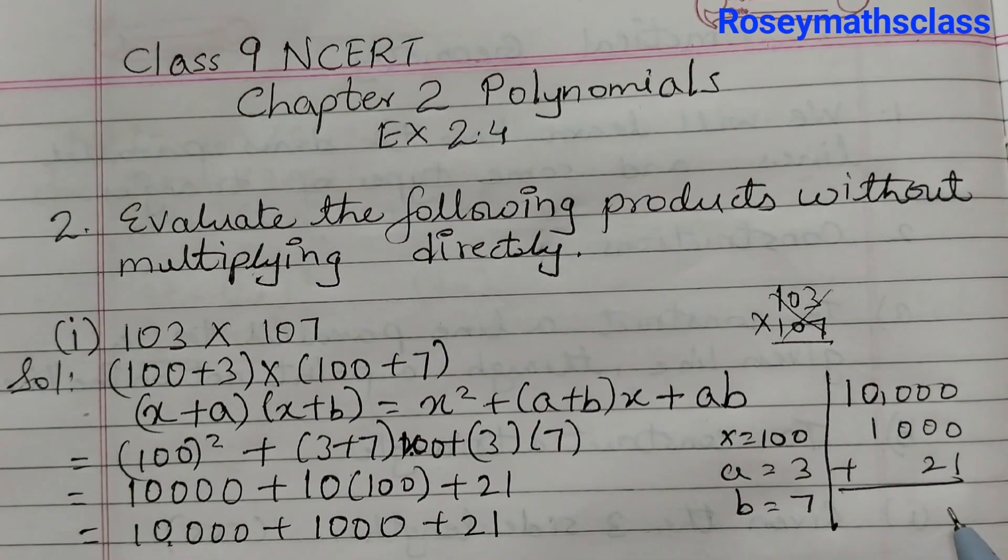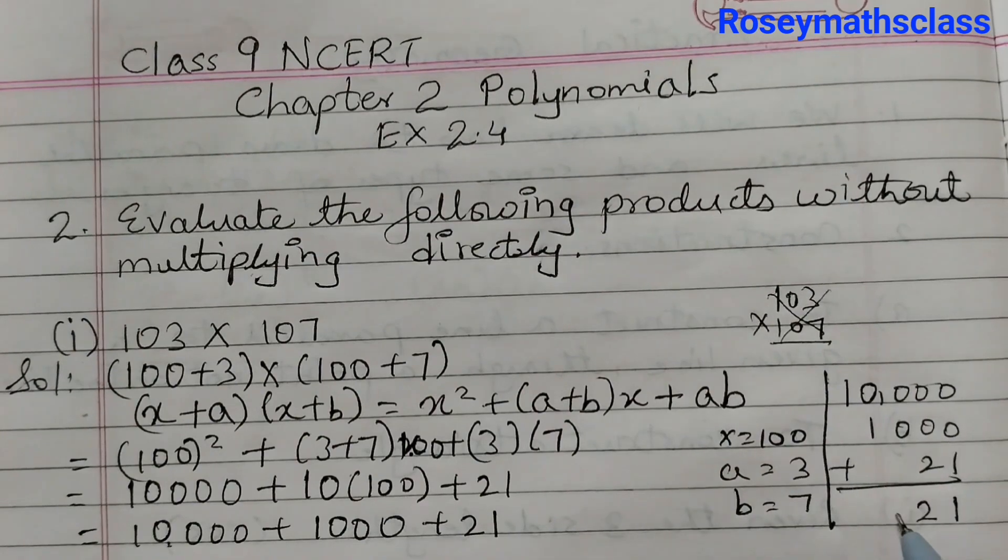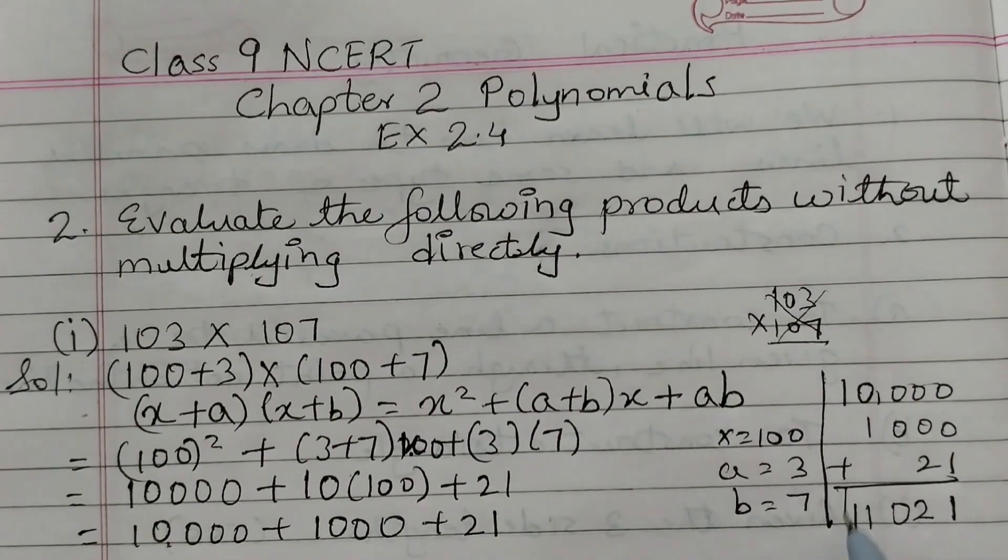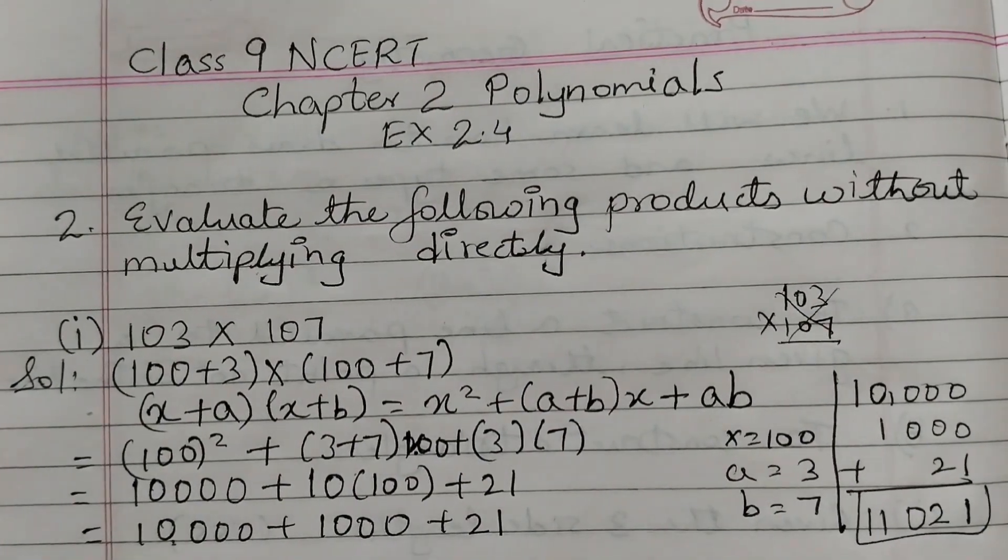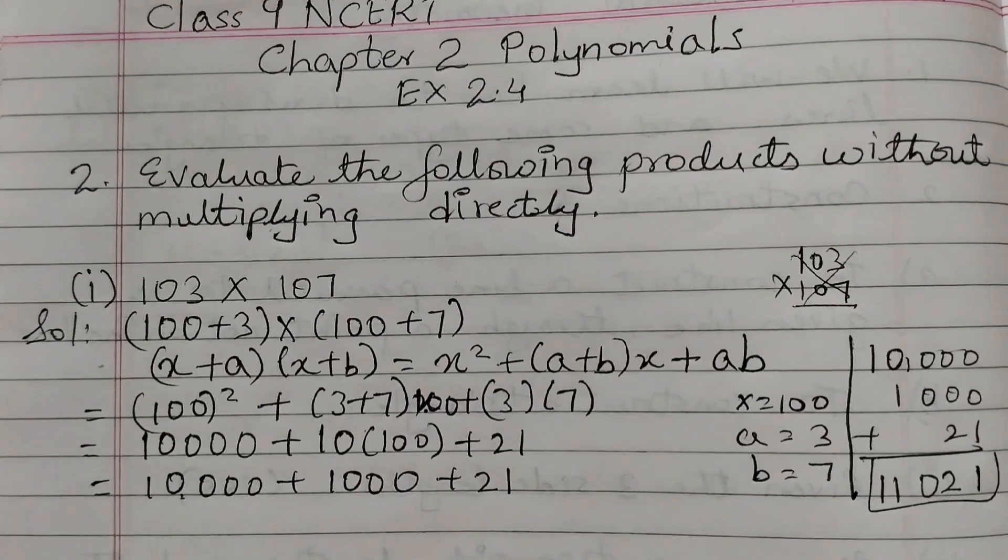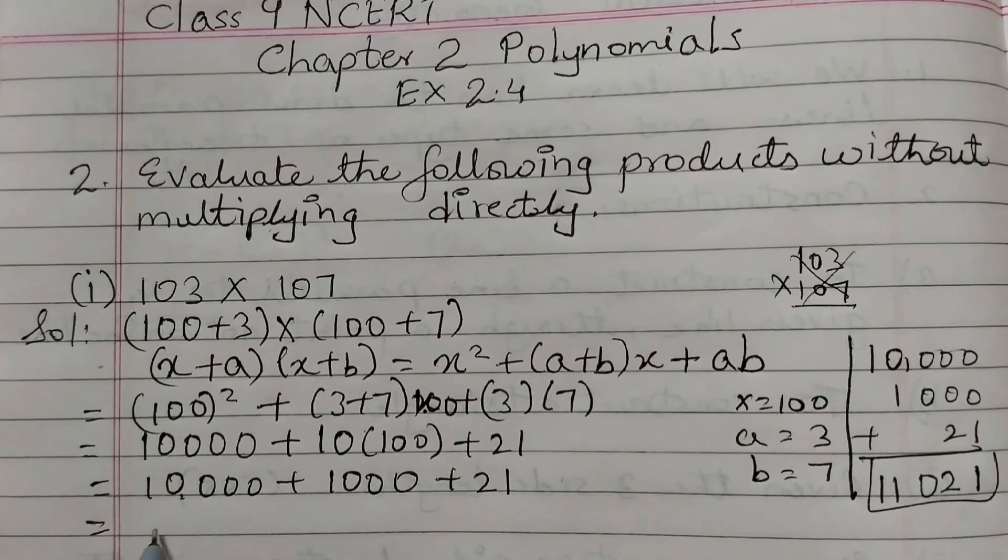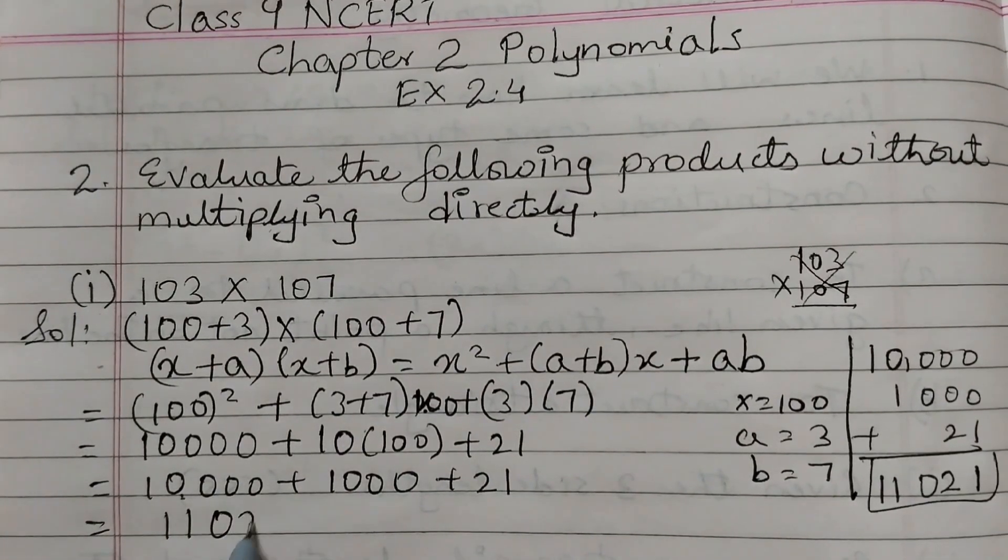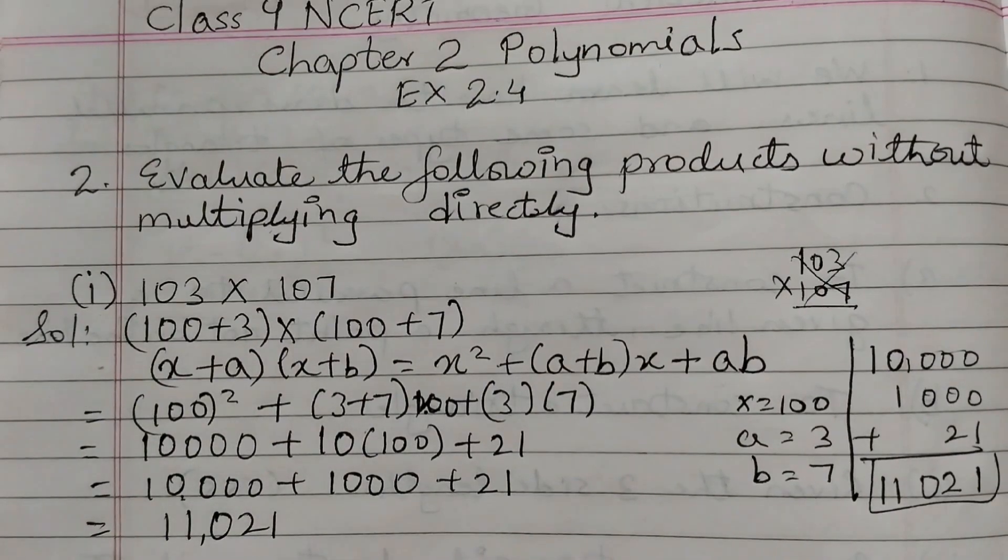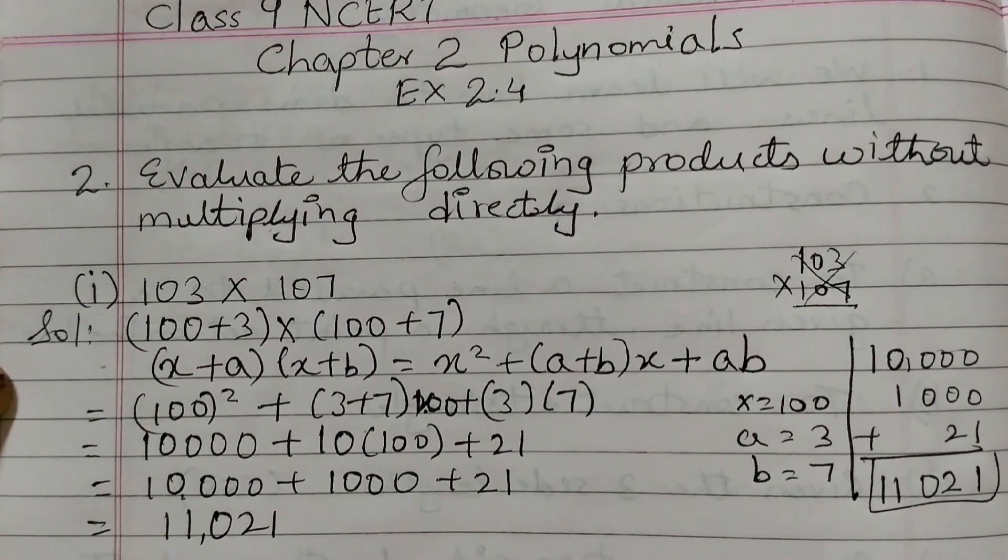10,000 plus 10 into 100 is 1,000 plus 21. You can do this addition mentally, however if you feel confused you can write it like this and do it. This is 11,021. The answer is 11,021. So this was the first question.